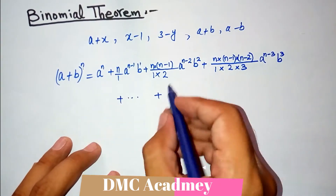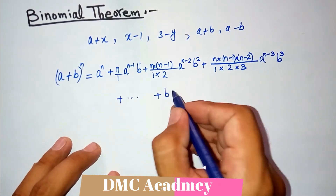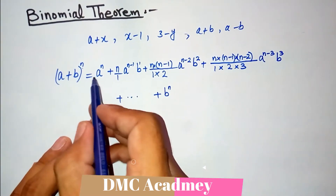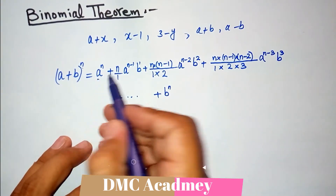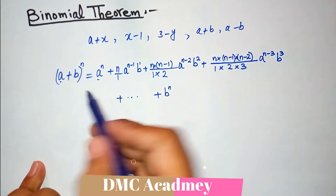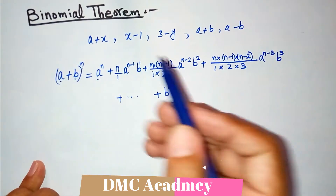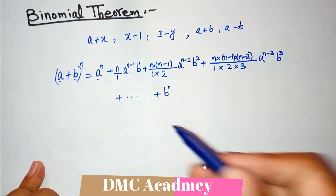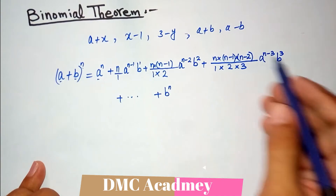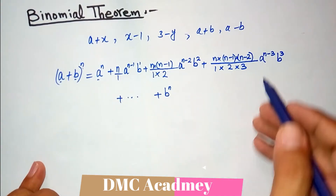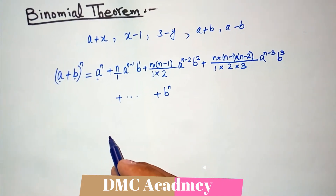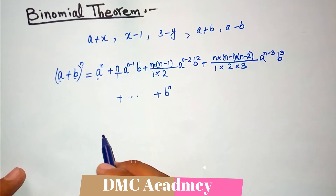At the end, b will have power n. In the beginning, a was having power n — that is the first term. At the end, the last term will have b raised to power n. So this is our binomial theorem. Let us now see how we expand using our formulas.